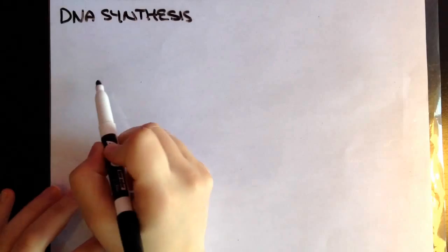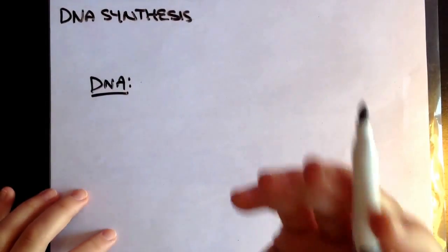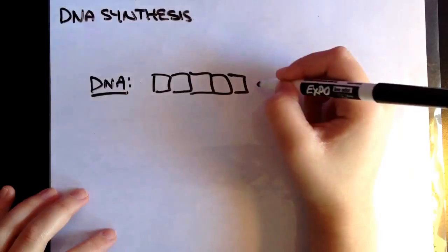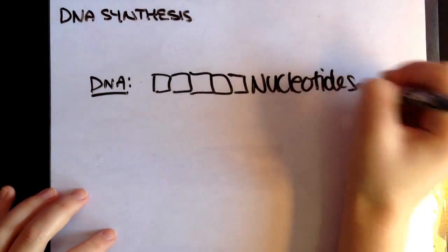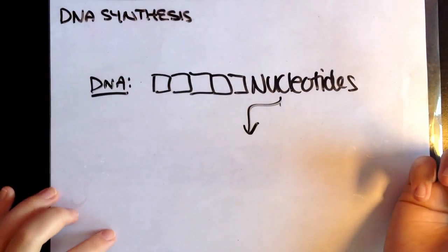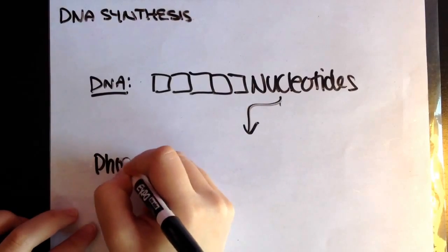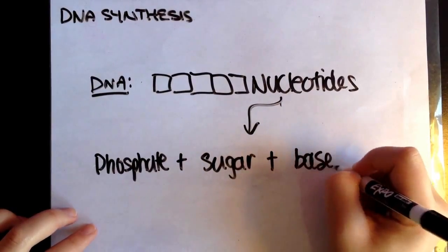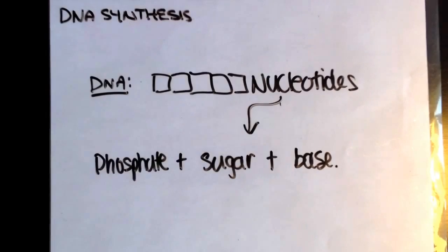Before I go on illustrating the whole process, there are a few key ideas you have to keep in mind. Basically, a DNA is made up of a bunch of nucleotides — these make up the strand of a DNA. What are nucleotides made up of? They're made up of a phosphate group, a sugar, and a base. Those are your ingredients to a nucleotide that makes up a DNA.